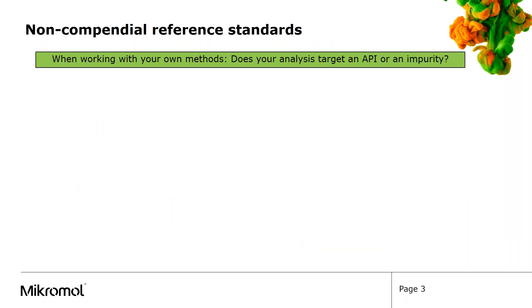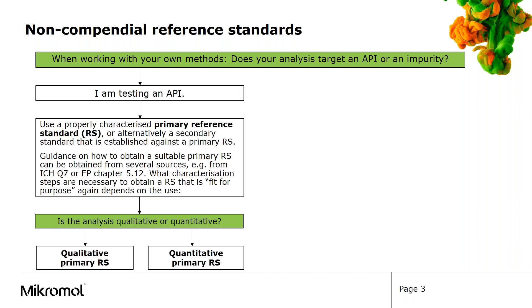The next question you can answer is if you are looking at an API or an impurity. If you are testing an API, the properly characterized primary reference standard would be the best choice.